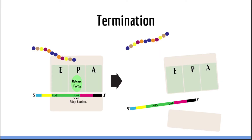Here we can see a simple illustration of termination of translation. Stop codons recruit special proteins known as release factors. These proteins bind the P site almost as if they were amino acids. However, instead of adding another amino acid to the new protein, they cause the ribosome-mRNA complex to disassociate. As a result, both ribosomal subunits separate from the mRNA and the new protein is released. The new protein may enter the endoplasmic reticulum or stay in the cytosol, depending on the type of protein. The leftover ribosome and mRNA molecule can be used again to make another protein.